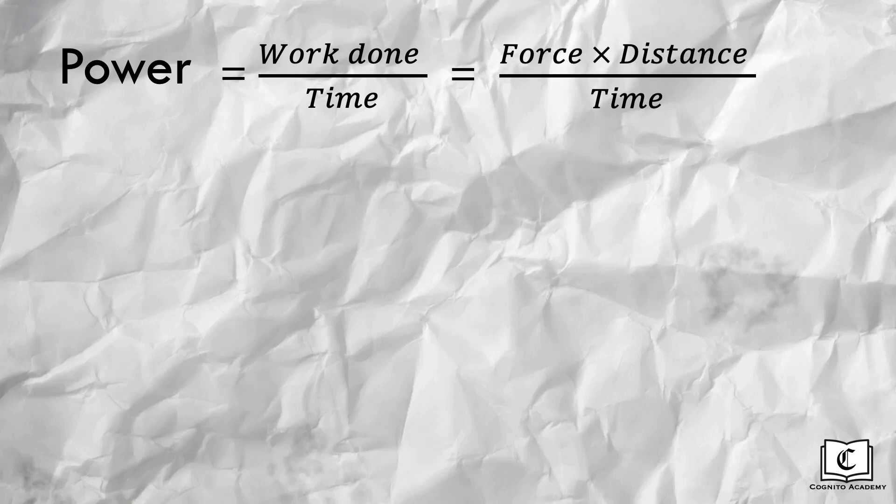So what is power? Power is the rate of work done, or work done per unit time. In the previous video, we learned that work done is given by force on the object multiplied by the distance it travelled in the force's direction. Hence, we can break down power further into force multiplied by distance per unit time.